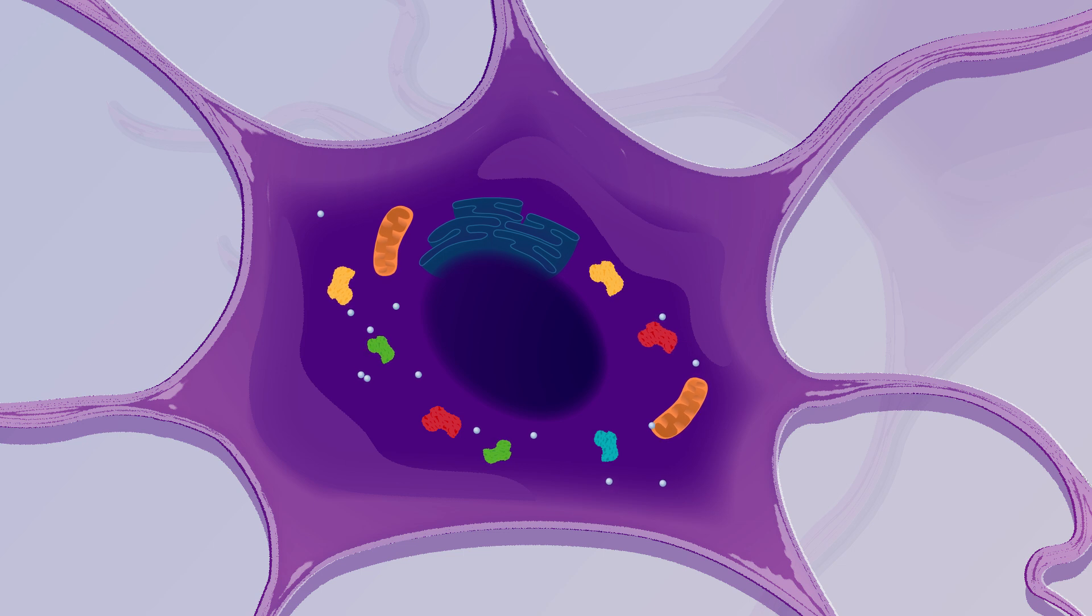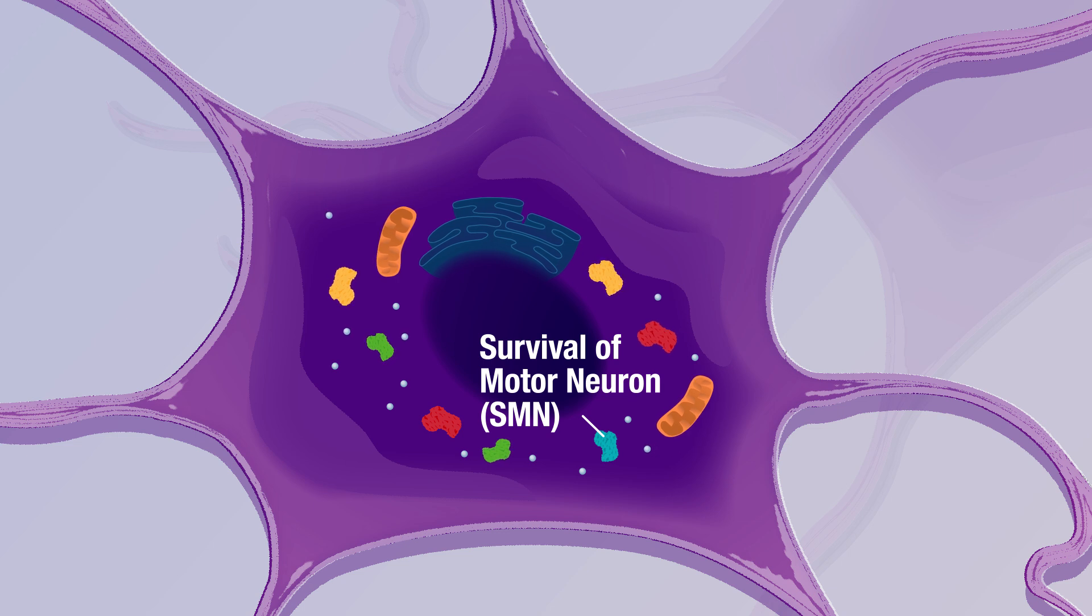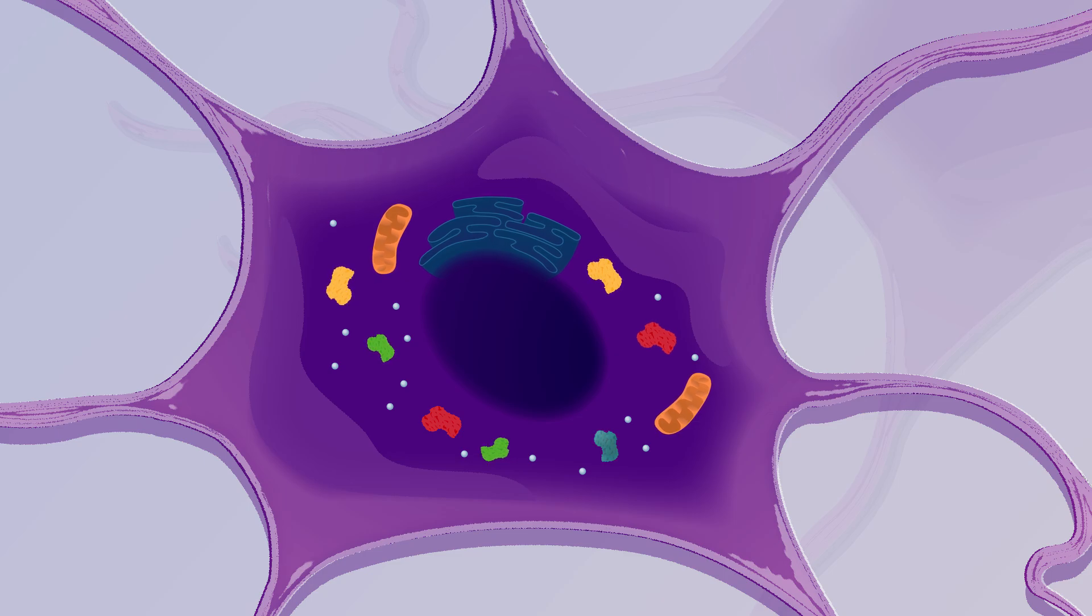One protein that's very important for cell function is called survival of motor neuron or SMN. In genetic disorders like type 1 spinal muscular atrophy, cells cannot produce enough healthy functioning SMN because they have a defective gene.